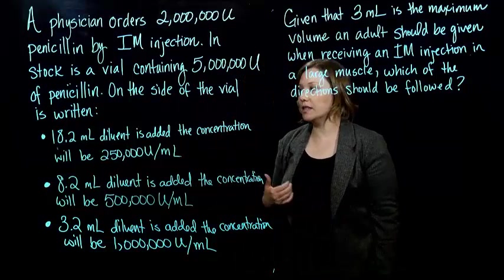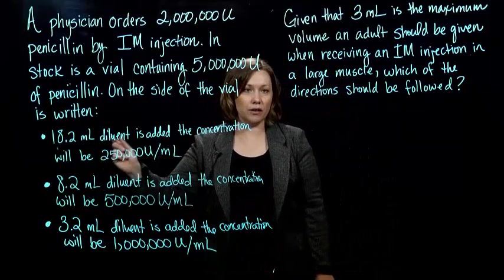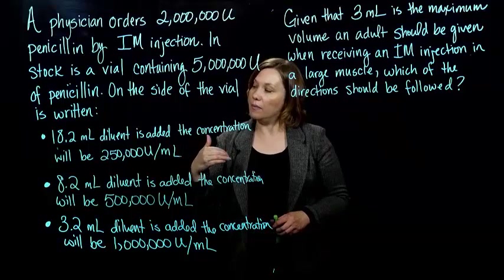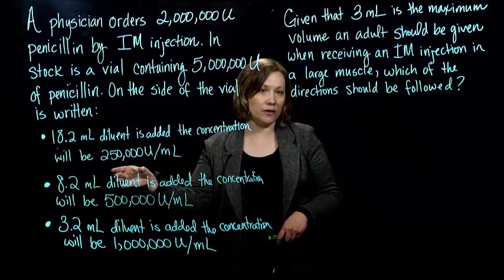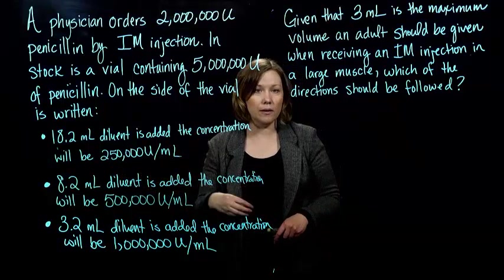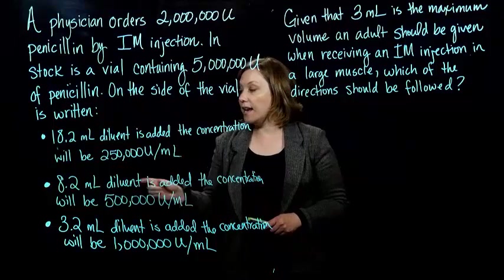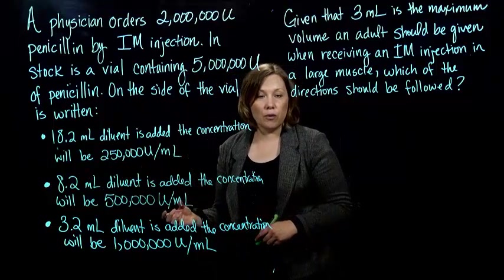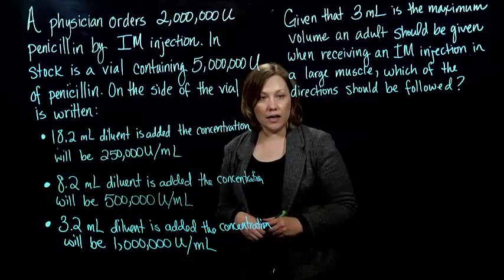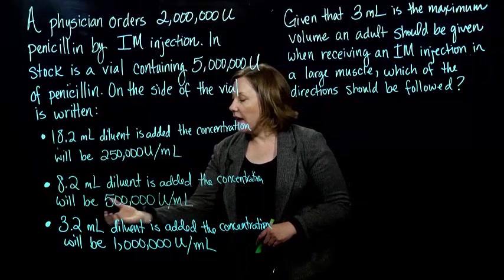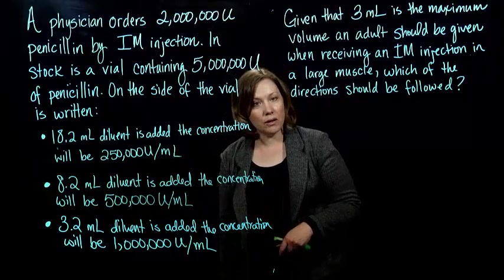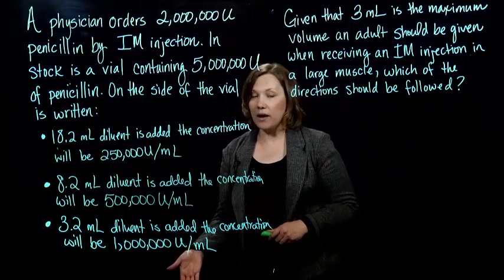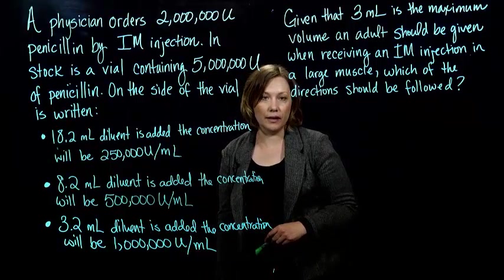It tells us if we add 18.2 milliliters of diluent, the concentration will be 250,000 units per milliliter. If we add 8.2 milliliters of diluent, the concentration will be 500,000 units per milliliter. And if we add 3.2 milliliters of diluent, the concentration will be 1 million units per milliliter.